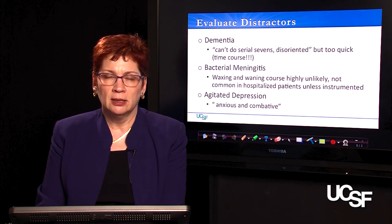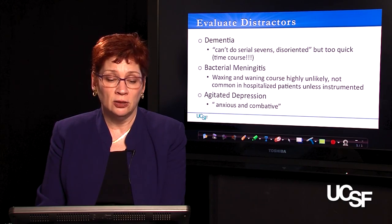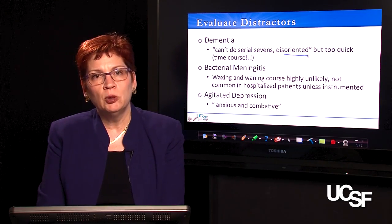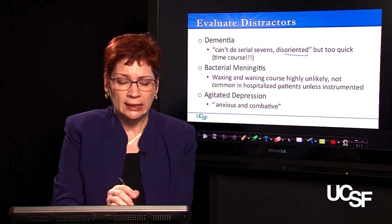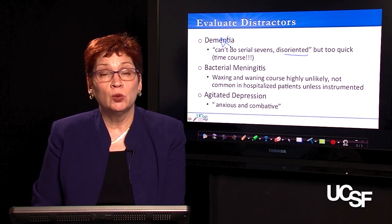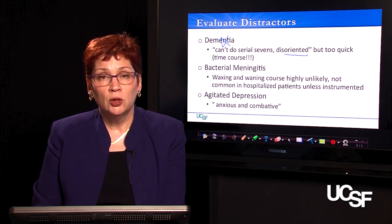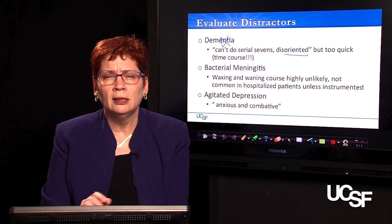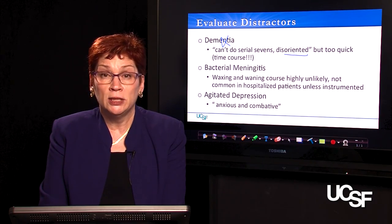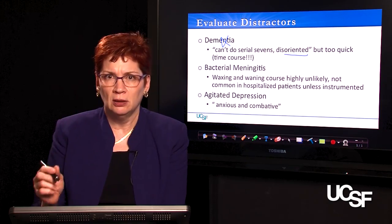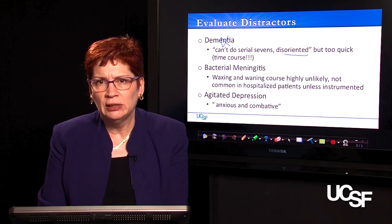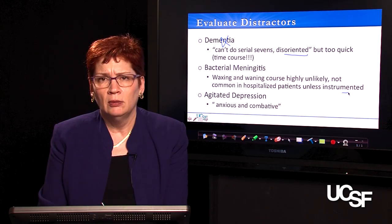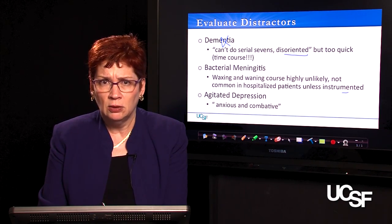Let's evaluate the distractors. First: dementia. He couldn't do serial sevens and was disoriented, but the time course was way too quick — so dementia seems unlikely. Second: acute bacterial meningitis. We'd be concerned about that in an elderly man with fever and confusion, but waxing and waning is an unlikely time course for bacterial meningitis — people tend to get steadily worse, not better then worse then better. And it's not common for hospitalized patients to get bacterial meningitis unless their spine was instrumented, which wasn't the case with Mr. Durrett.